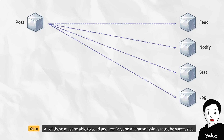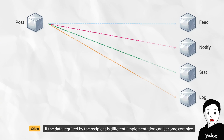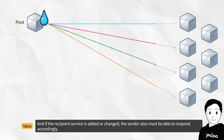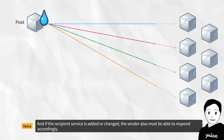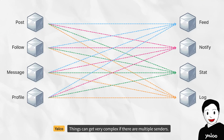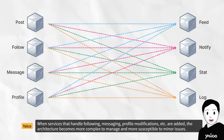All of these must be able to send and receive, and all transmissions must be successful. If the data required by the recipient is different, implementation can become complex, and if the recipient service is added or changed, the sender also must be able to respond accordingly. Things can get very complex if there are multiple senders — when services that handle following, messaging, profile modifications, etc. are added.